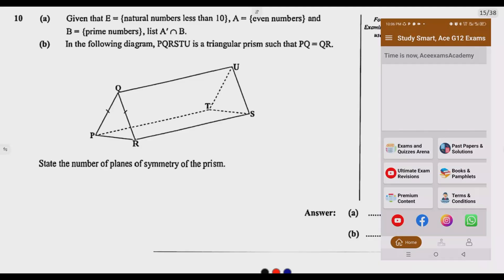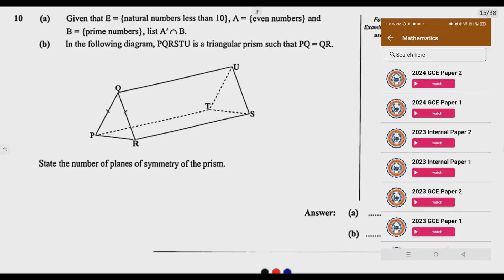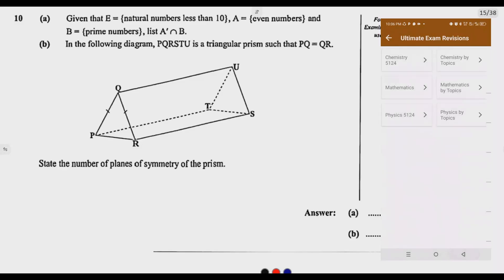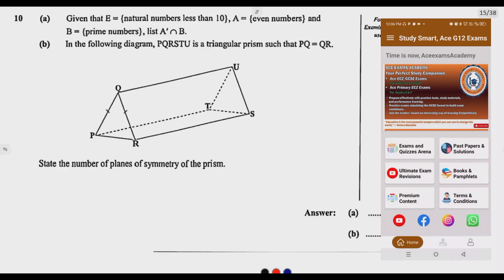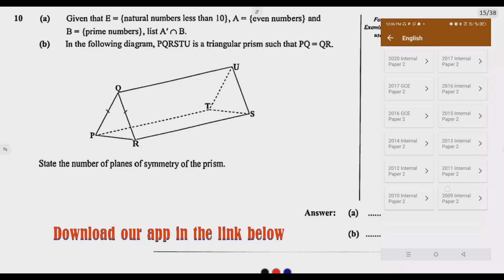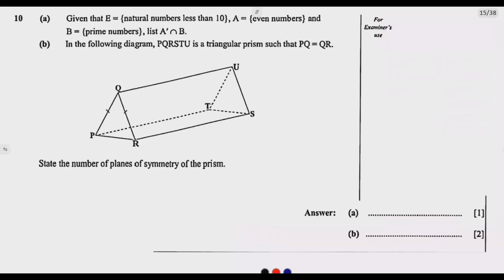List set A complement intersection B. Then question B, in the following diagram PQRSTU is a triangular prism such that PQ equals QR. State the number of planes of symmetry of the prism. So question one has one mark, just asking us to find this set. What do we need to do?